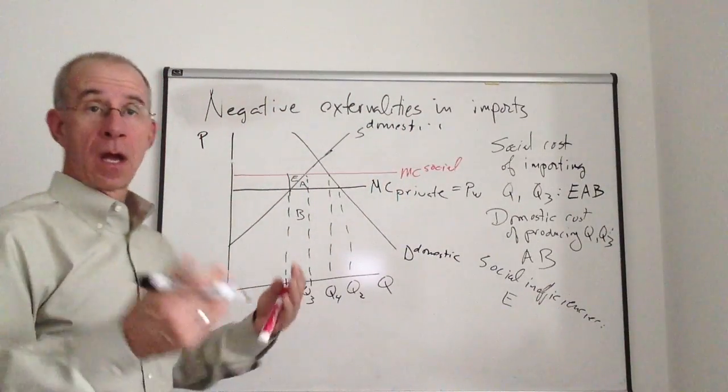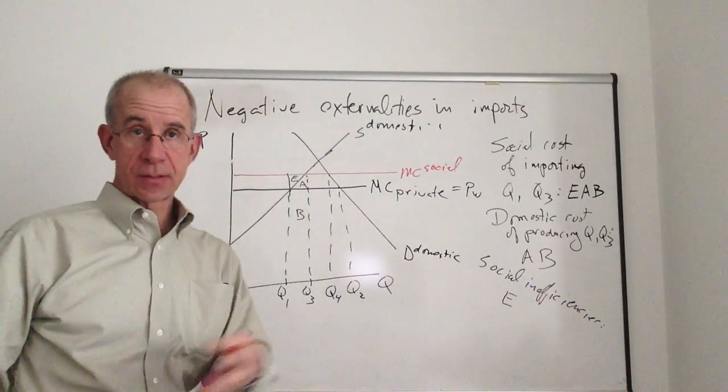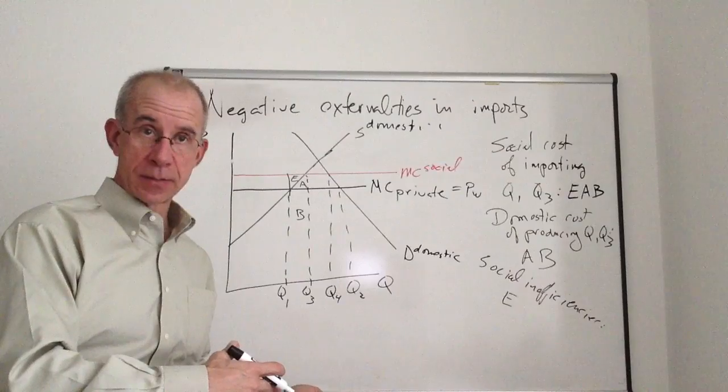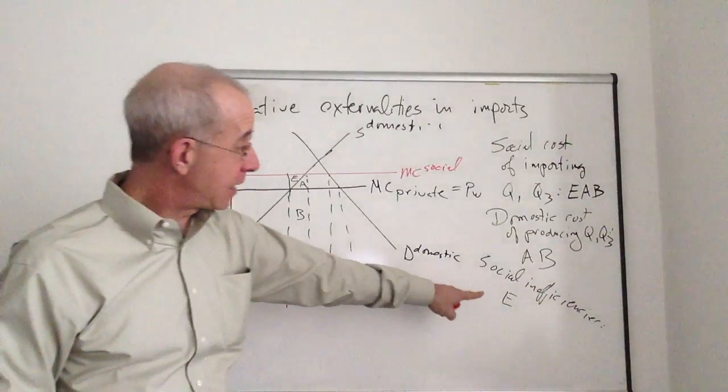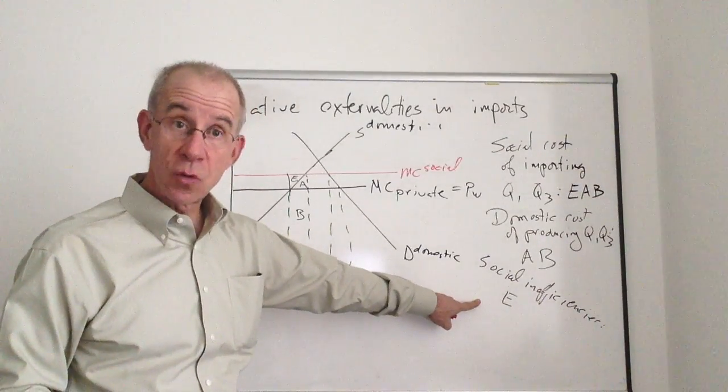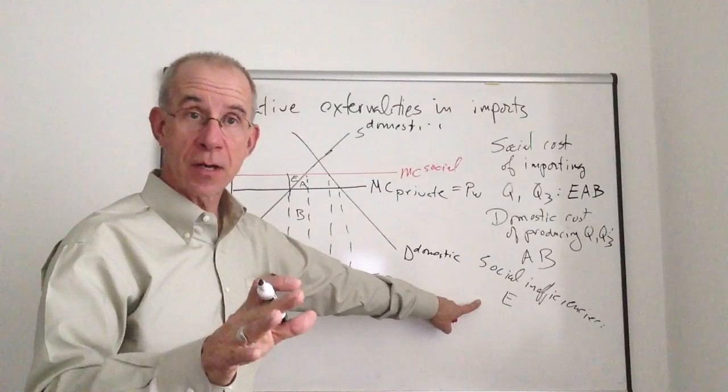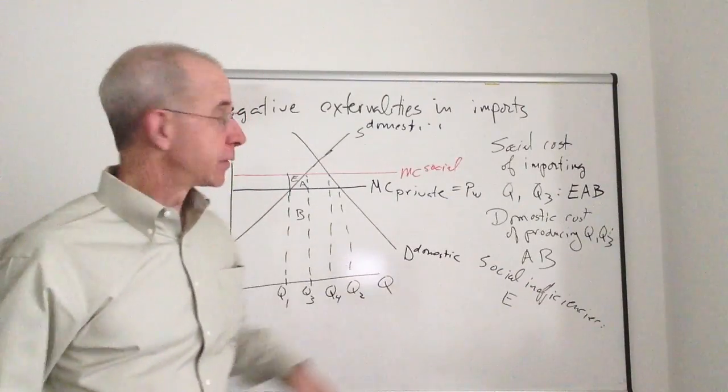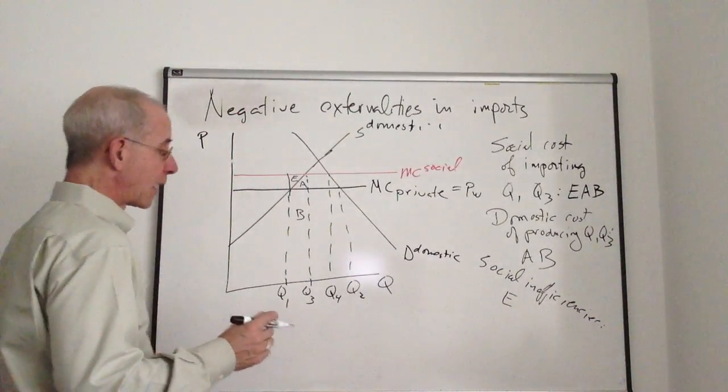So by importing this amount, Q1 to Q3, there are social inefficiencies of E. That's the excess of import costs over and above the domestic production costs. So free trade has this inefficiency of E, too little domestic production relative to imports.